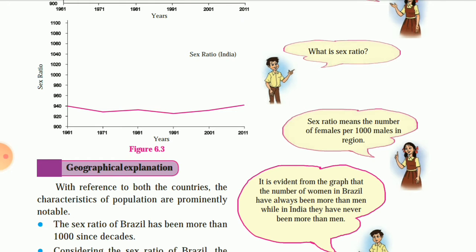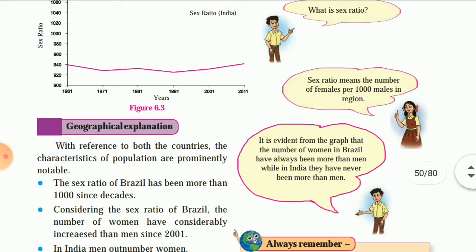It is evident from the graph that the number of women in Brazil have always been more than men, while in India they have never been more than men. So the number of females has never exceeded males in India, whereas in Brazil it always has.